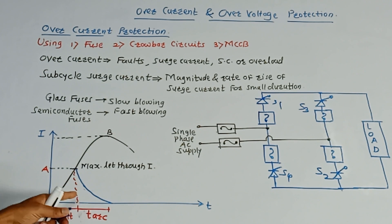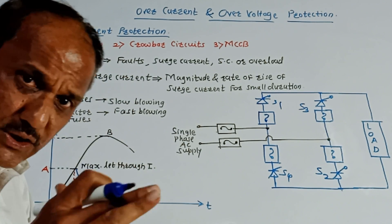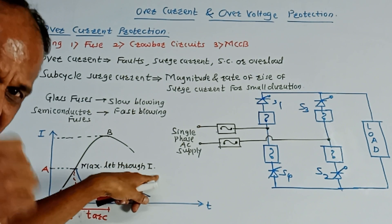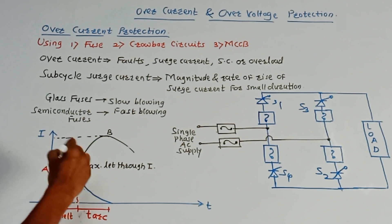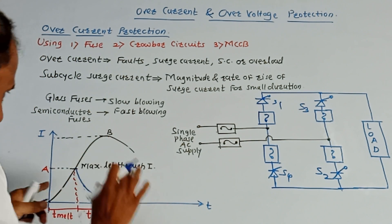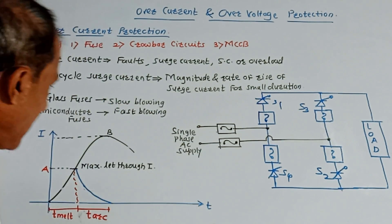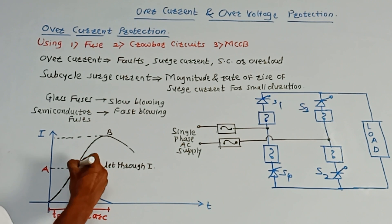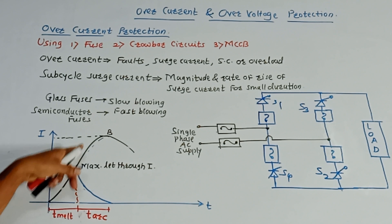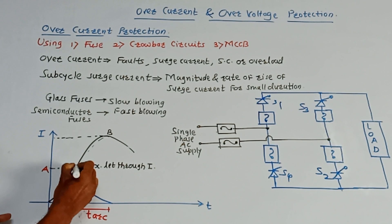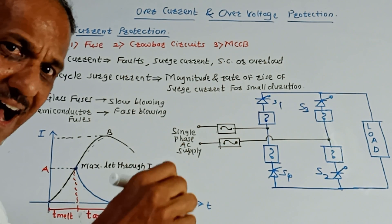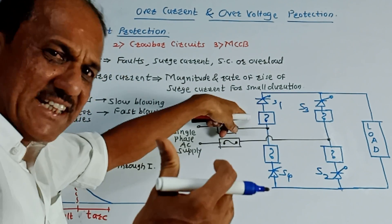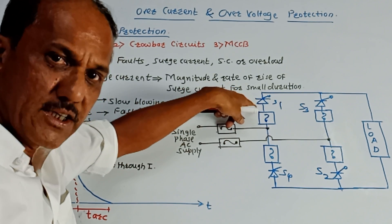This is the corresponding graph of current versus time, that is the current flowing through the fuse versus time. Point A indicates the maximum let-through current, that is maximum allowed current. Beyond that, if the current increases up to point B, point B indicates that the surge current may increase in the absence of a fuse. But due to use of fuse, once the current reaches up to point A, arcing between the fuse takes place. Because of this, the temperature gets increased and there will be an open circuit, which will protect the corresponding SCR.